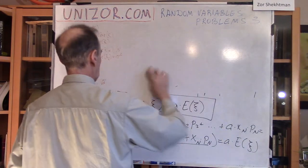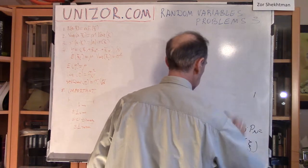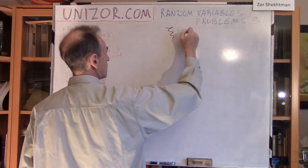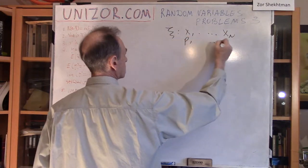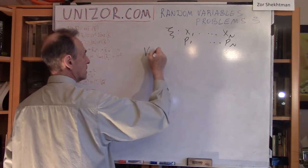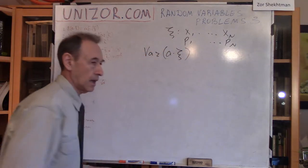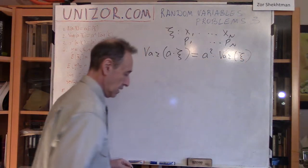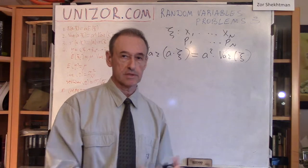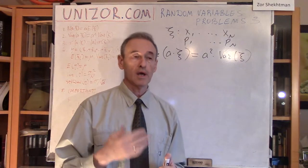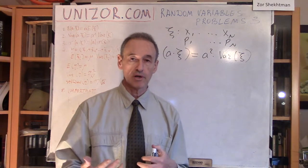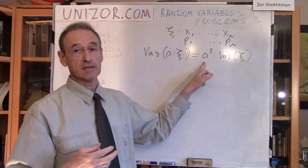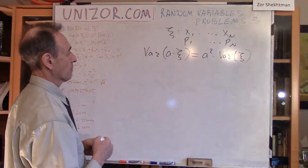Problem number two is analogous, but we will now talk about variance. We have this variable xi which takes x1, ..., xn with probabilities p1, ..., pn. I am interested in the variance of A times xi. My theorem is that this equals A squared times the variance of xi. Variance is a weighted average of squares of deviations from the mean value, from the expectation — and that squaring is intuitively what produces the A squared factor. But let's just do it mathematically.